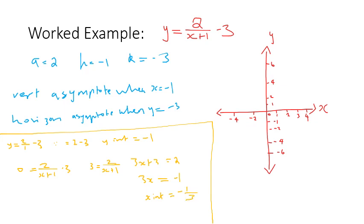Now we move on to graphing and sketching our hyperbola. We put in our asymptotes: the vertical asymptote at x = −1, so our curves cannot touch that line, and the horizontal asymptote at y = −3, which our hyperbolas cannot touch either. We then plot our intercepts: y equals negative one and x equals negative one-third. We draw our curve, and that's our first rectangular hyperbola — the second one should just mirror it.